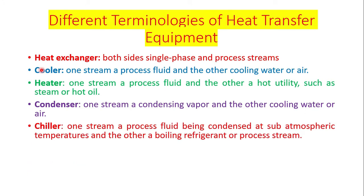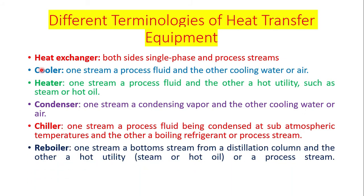A chiller is a type where one stream is a process fluid being condensed at sub-atmospheric temperatures while the other is a boiling refrigerant or process stream. The hot utility can be steam, hot oil, or a process stream. We will mainly focus on heat exchanger design — specifically thermal design.